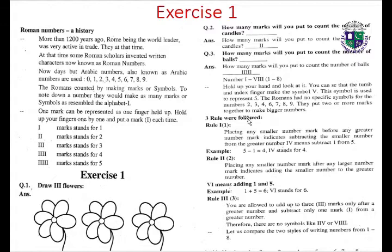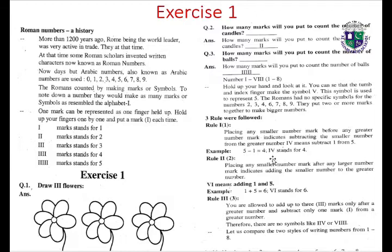Rule number one, rule two, and rule three. Placing any smaller number mark before any greater number mark indicates subtracting the smaller number from the greater number. For example: IV means subtract one from five — five minus one equals four. IV stands for four; four is a Roman numeral.